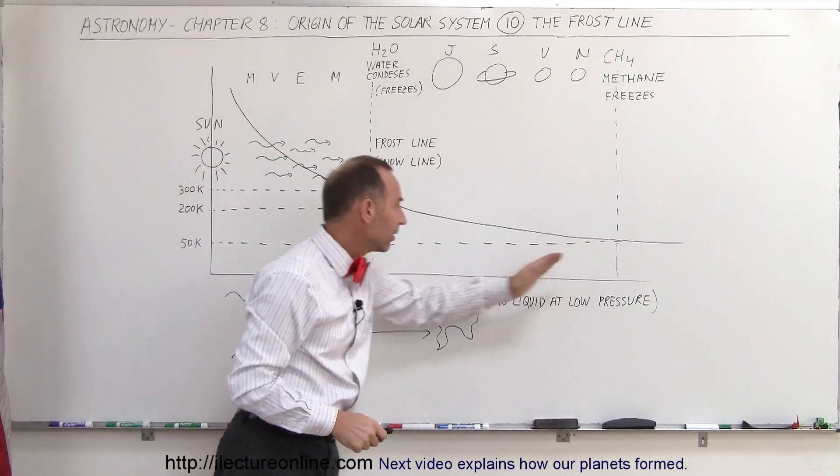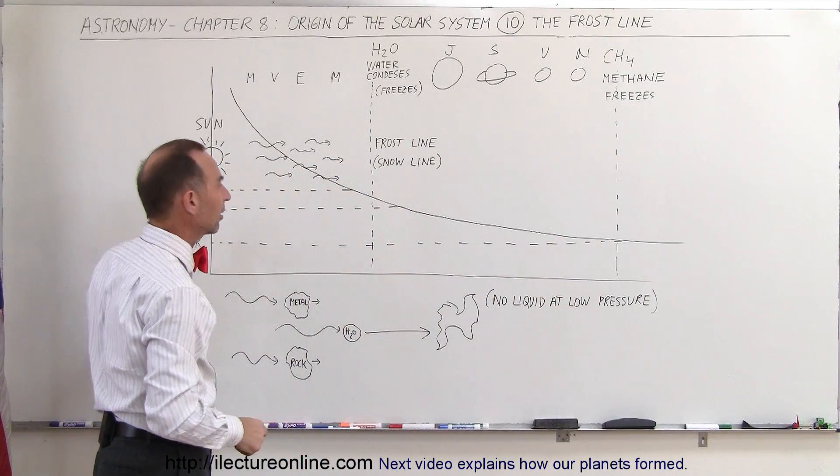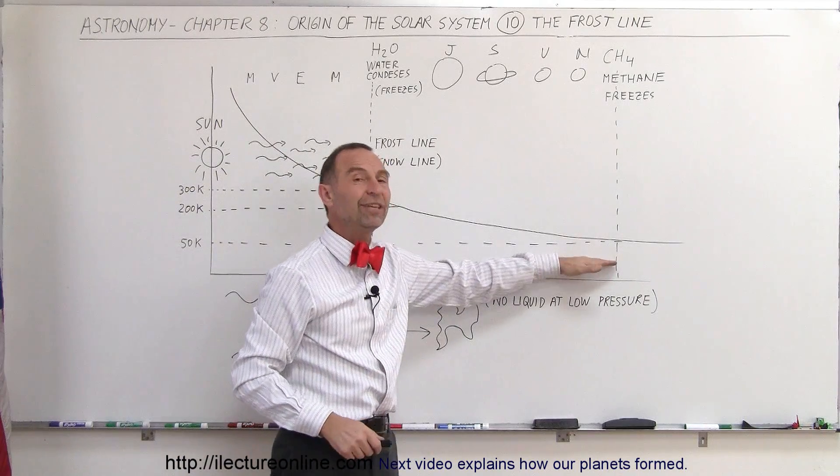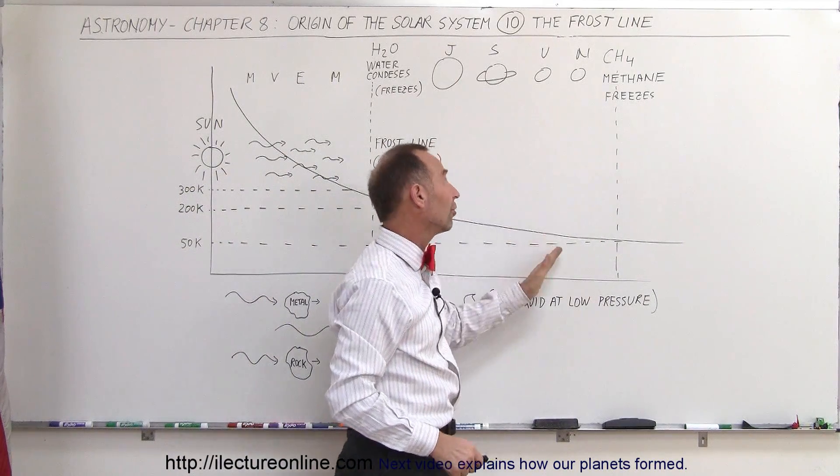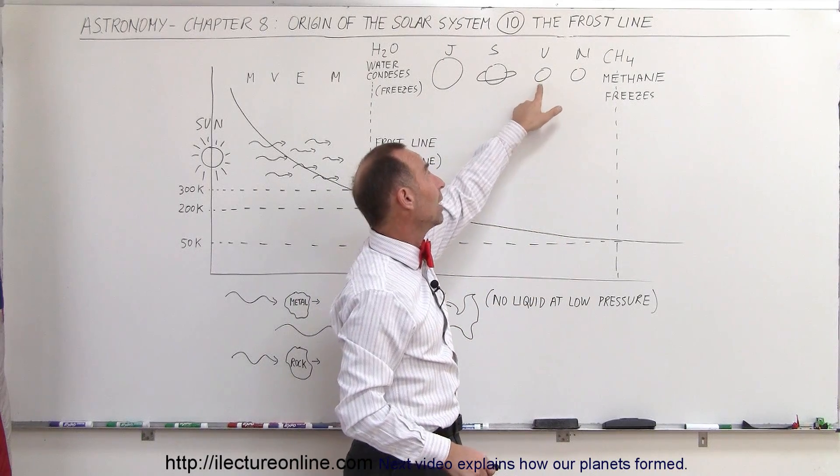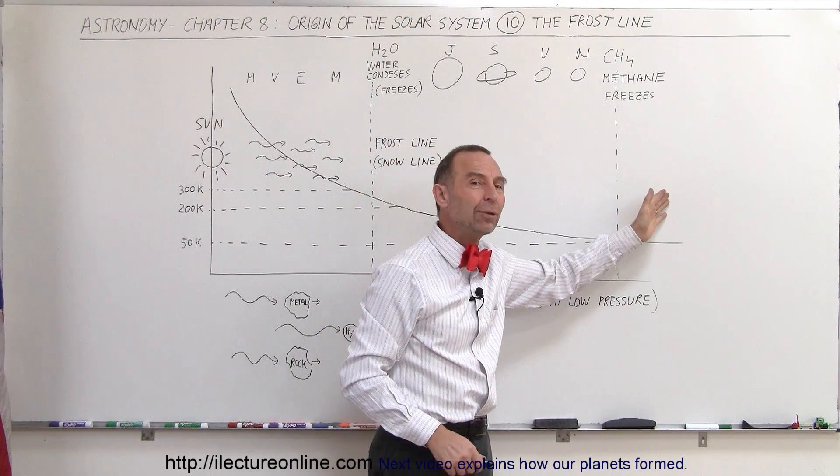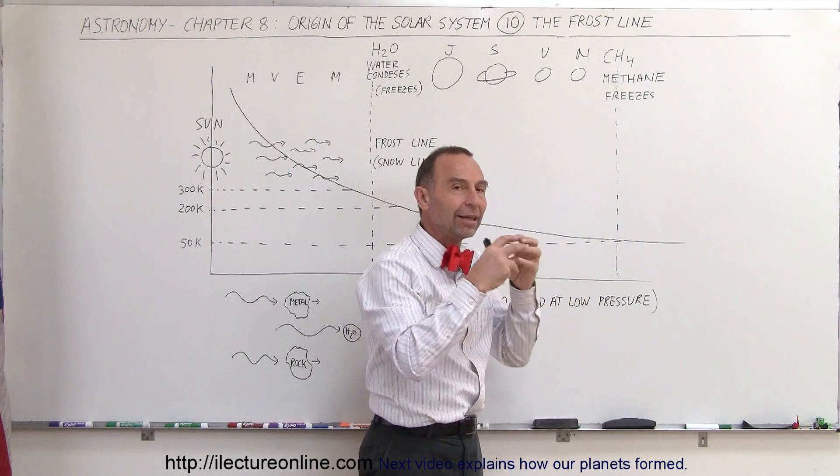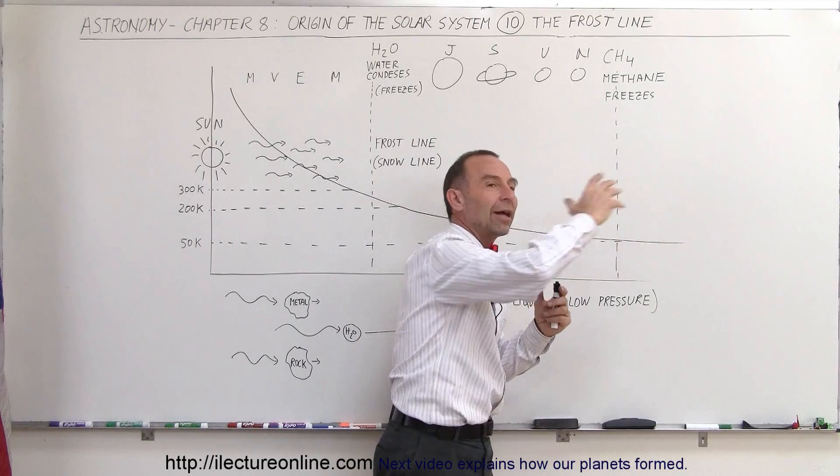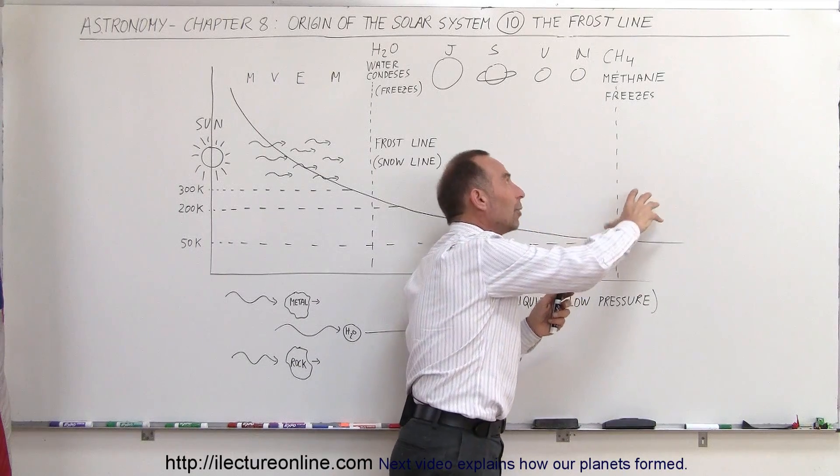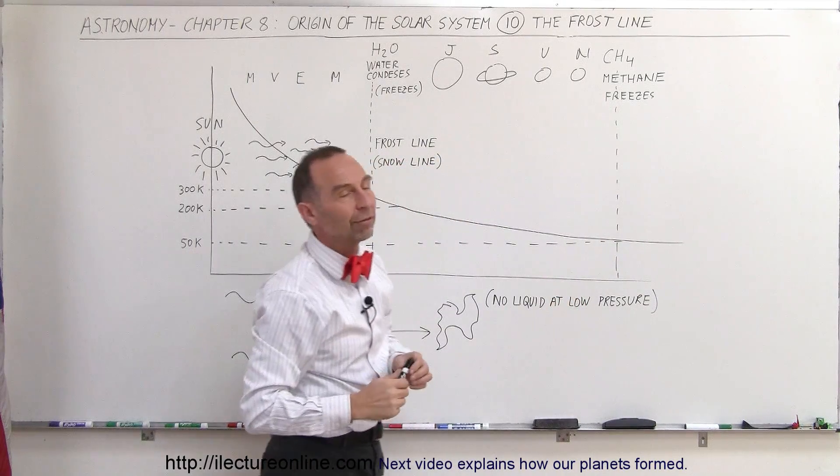Eventually, going far enough, we get to a place so far away from the sun that the temperature drops to about 50 Kelvin. At that point, methane will also begin to freeze. It turns out that the two gas planets Uranus and Neptune have a significant amount of methane within them because at that point, methane would begin to freeze up and the radiation would no longer be able to clear it out. It would stay in that region where those two gas planets formed.